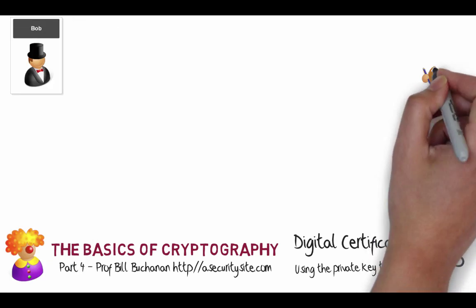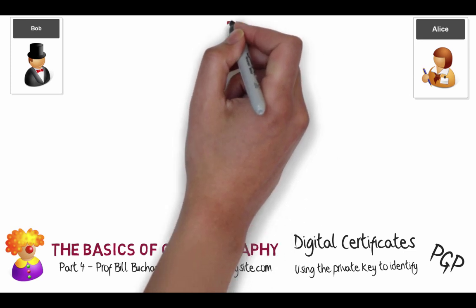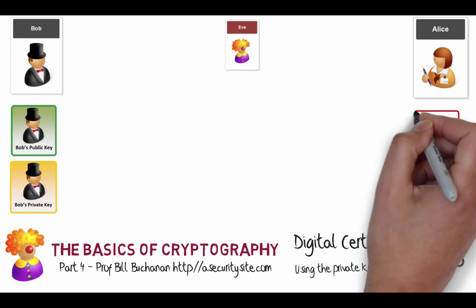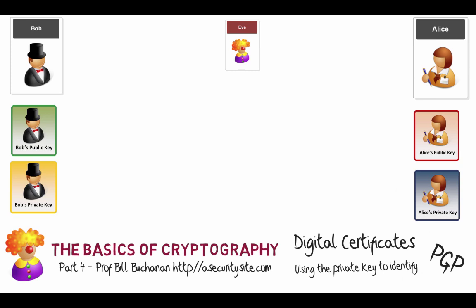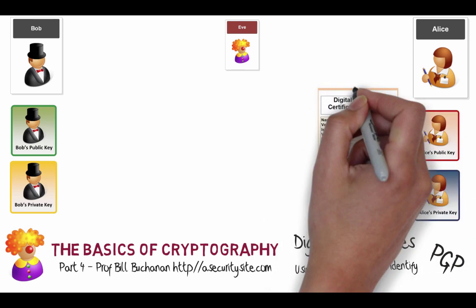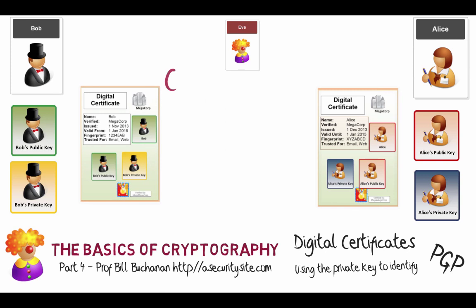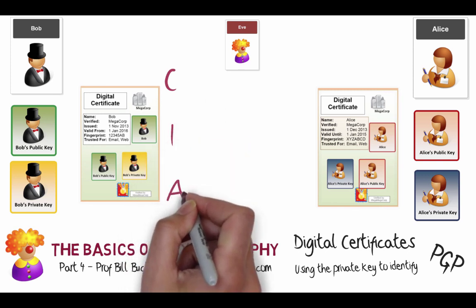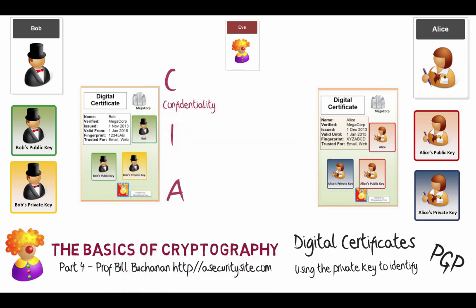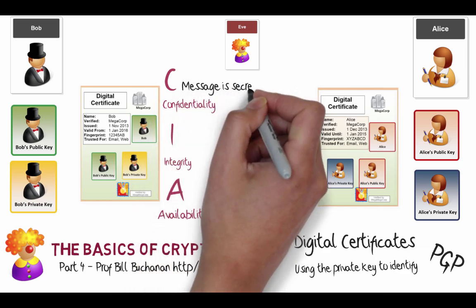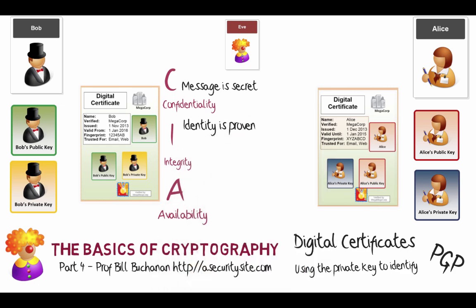Let's bring back Bob and Alice, and in the middle we have Eve. We'll try and make sure that Bob and Alice can communicate with each other, for Bob to identify himself, and for Alice to know that messages haven't been changed. We'll look at how we can use digital certificates to make sure that we have CIA — Confidentiality, Integrity, and Availability — specifically that the message is secret, the identity is proven, and the message is unchanged.